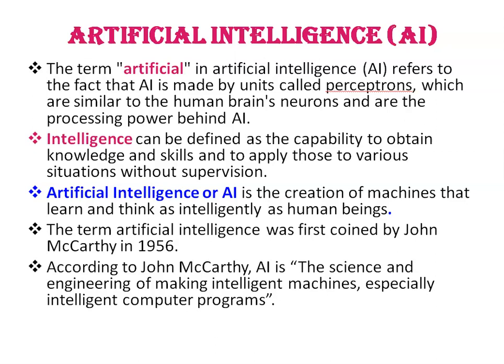Artificial intelligence is the creation of machines that learn and think as intelligently as human beings. Machines are traditionally known to follow rigid instructions, but contemporary machines are designed to think and have the capability to perform tasks by learning. The term 'artificial intelligence' was first coined by John McCarthy in 1956. According to him, artificial intelligence is the science and engineering of making intelligent machines, especially intelligent computer programs.